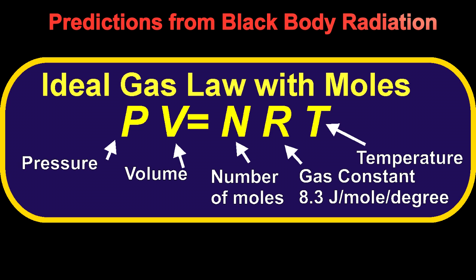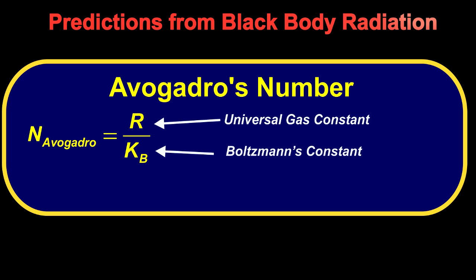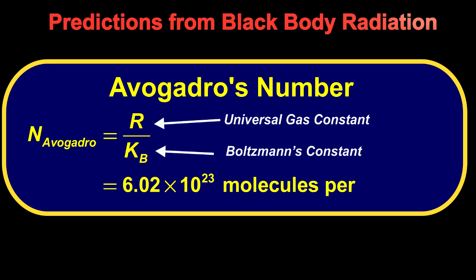Now remember that chemists in the 1800s had measured the universal gas constant, knowing only moles and not knowing the number of molecules per mole. The number of molecules per mole is called Avogadro's number, and it can be calculated once you know the Boltzmann constant — a high school student can show you the formula. And for the first time in history, Planck knew that the number of molecules per mole is 6.02 times 10 to the 23rd. Thus, measuring black body radiation allowed scientists to calculate the number of atoms in a mole.